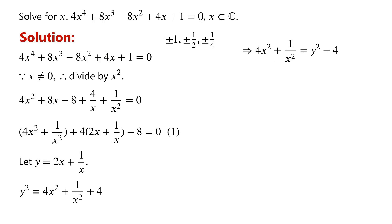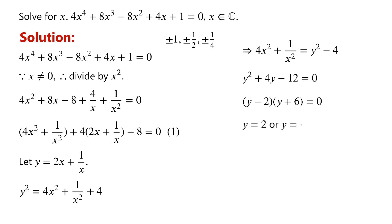Now substitute 2x plus 1 over x, and 4x squared plus 1 over x squared, into equation 1. We have y squared plus 4y minus 12 equals zero. Factoring the left-hand side, we have (y minus 2)(y plus 6) equals zero. So either y equals 2, or y equals negative 6.